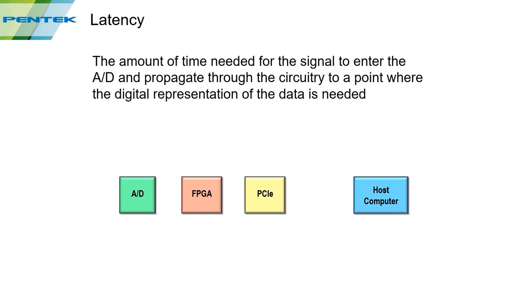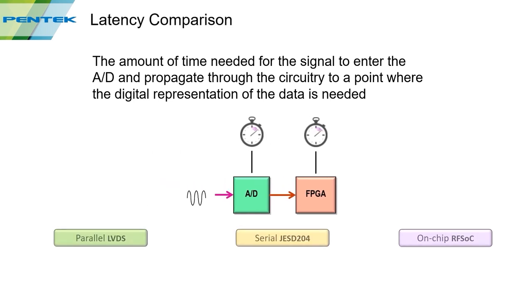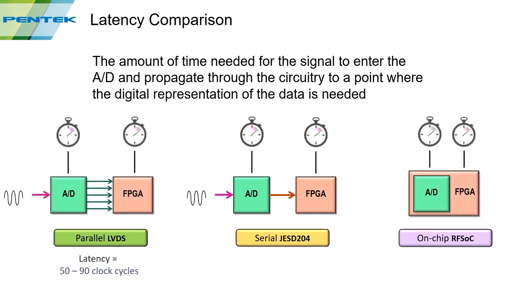Looking at latency — defined as the time for an analog signal to enter the ADC, propagate through all circuitry, and appear in the FPGA. Parallel interfaces provide the least latency: 50 to 90 clock cycles. The RFSOC is close at 86 to 166 clock cycles. The serial JESD204 interface has much longer latency — many times more — because serializing, transmitting, deserializing, and aligning the data takes significant processing.